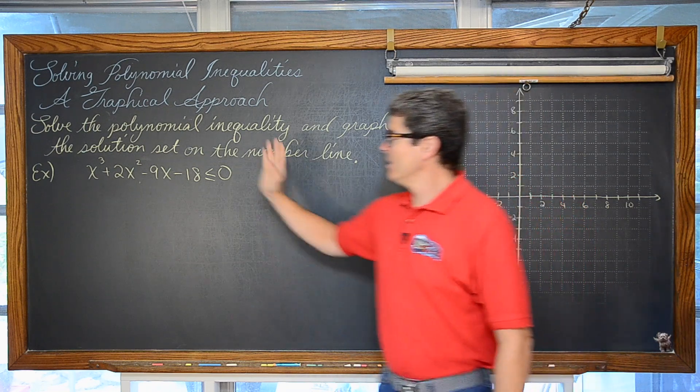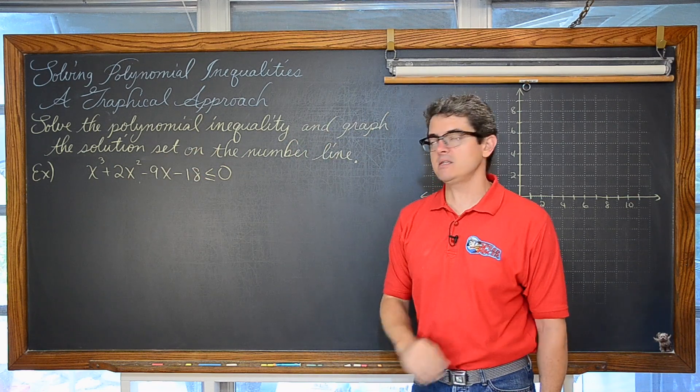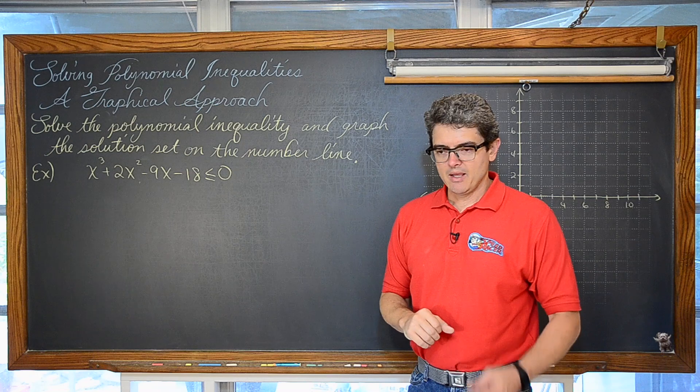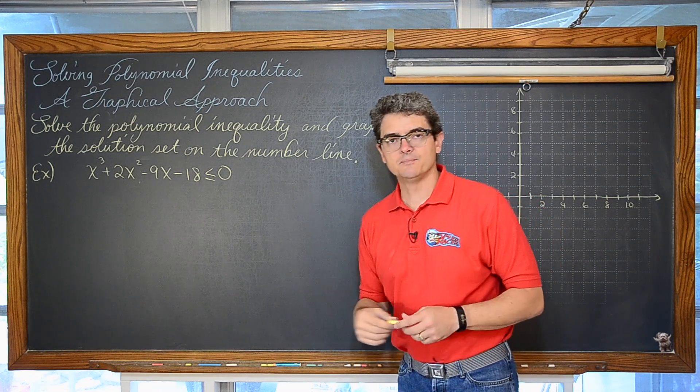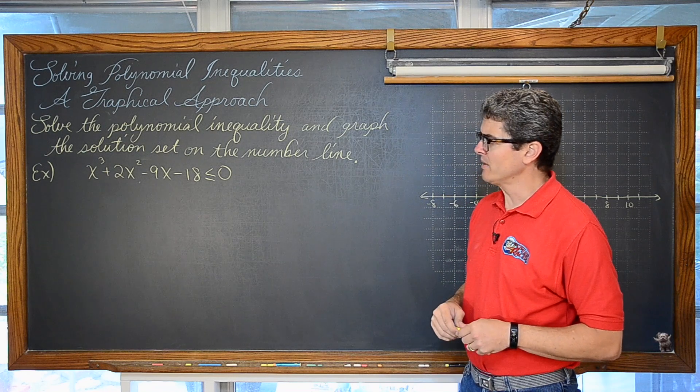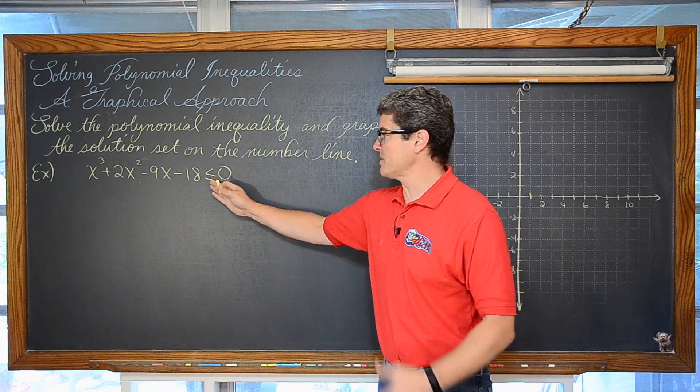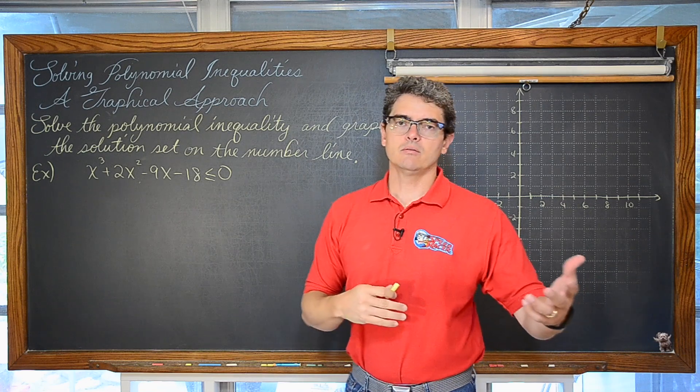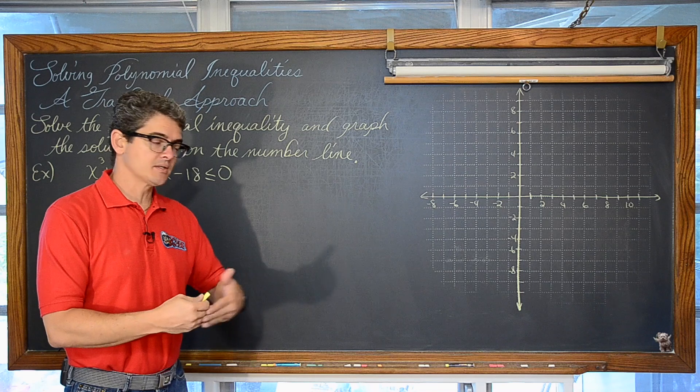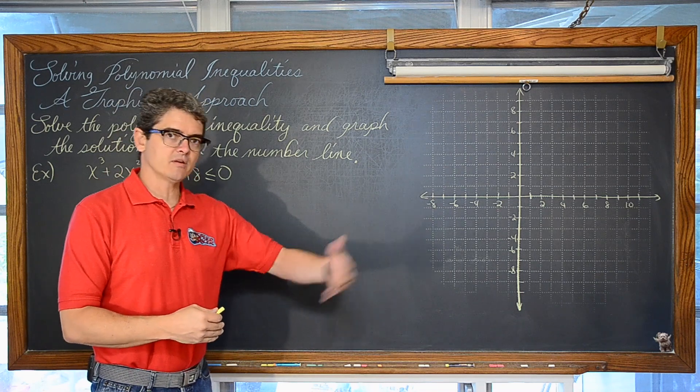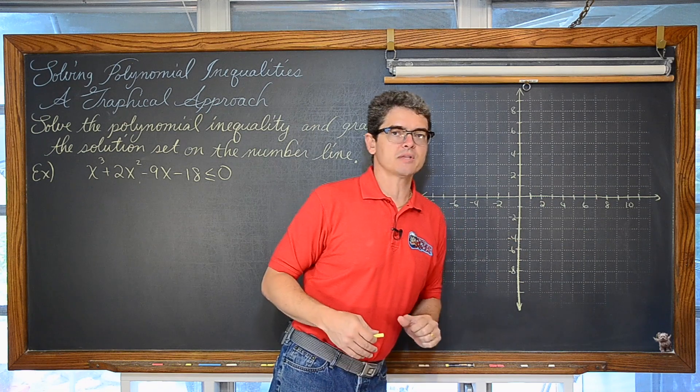Our first example, we have x cubed plus 2x squared minus 9x minus 18 is less than or equal to zero. And the start of this process is going to look like our other technique that's in the other video, which is we're going to solve this for zero. Even if it wasn't part of the inequality, we would either be finding the critical values we're going to use along the number line to test the intervals, set up the intervals we will test, or in this case, using a graphical approach, we want to find those x intercepts.